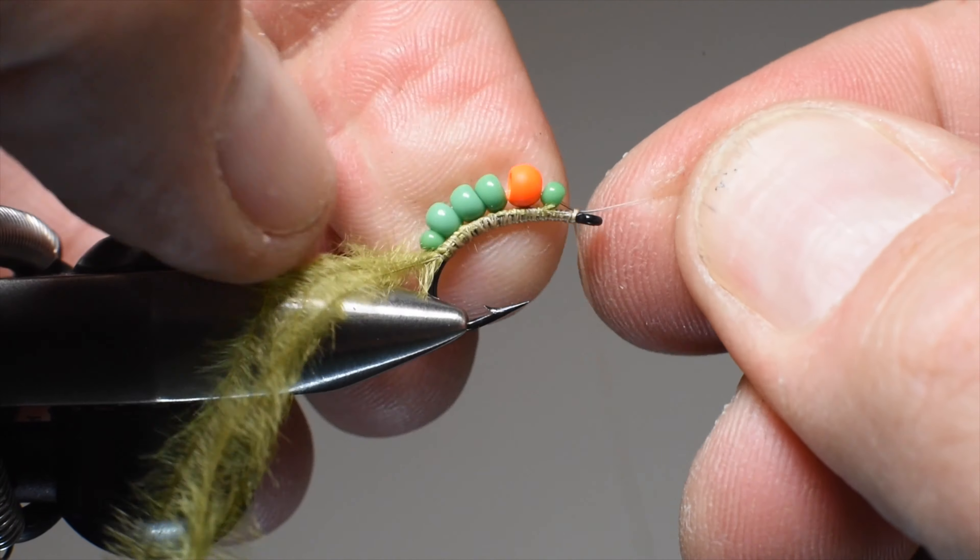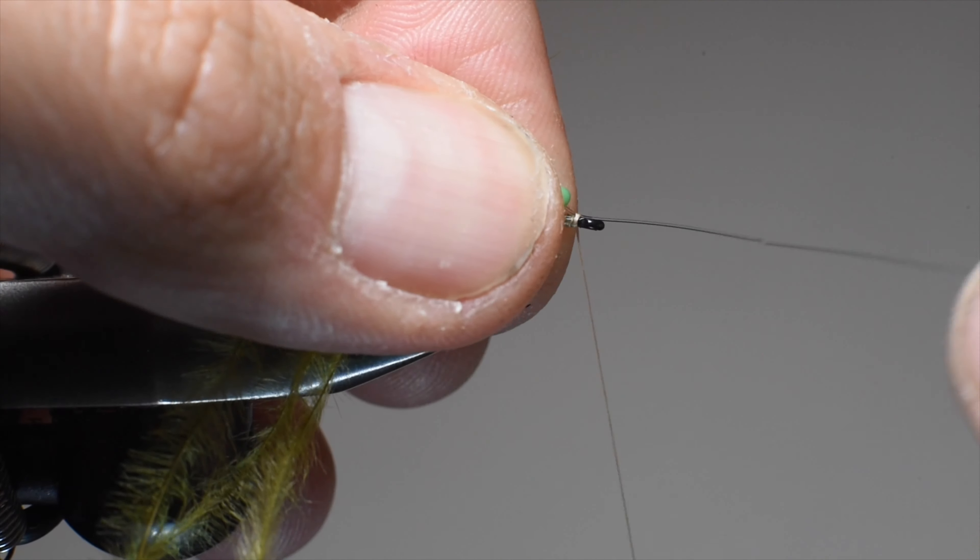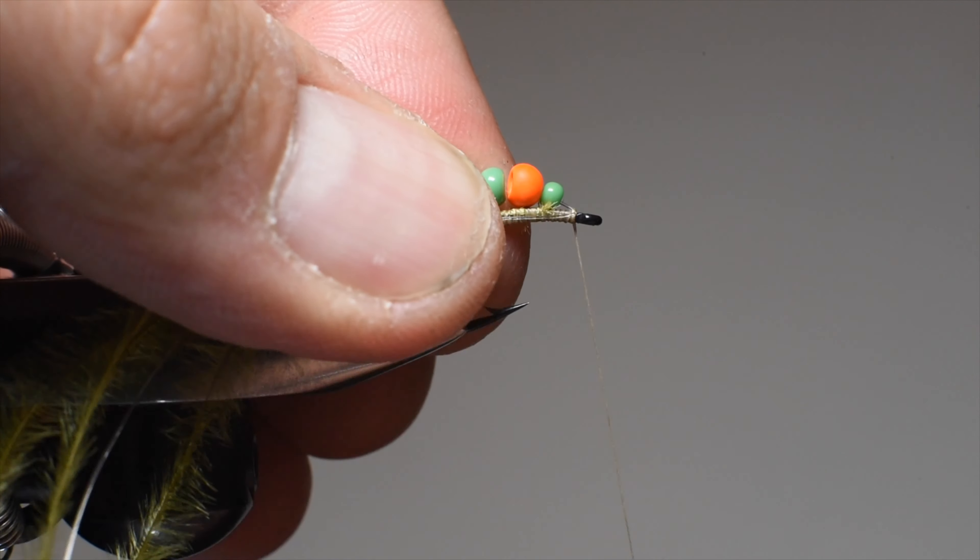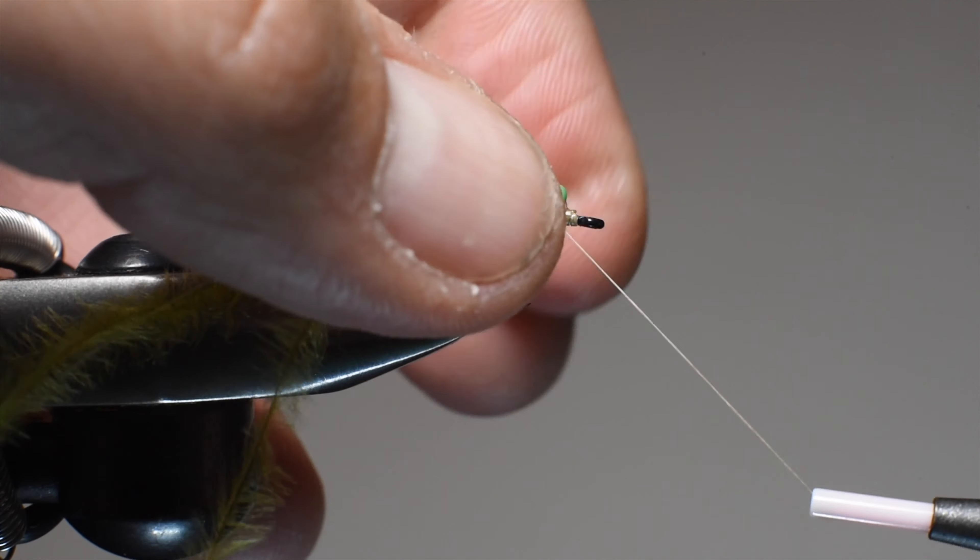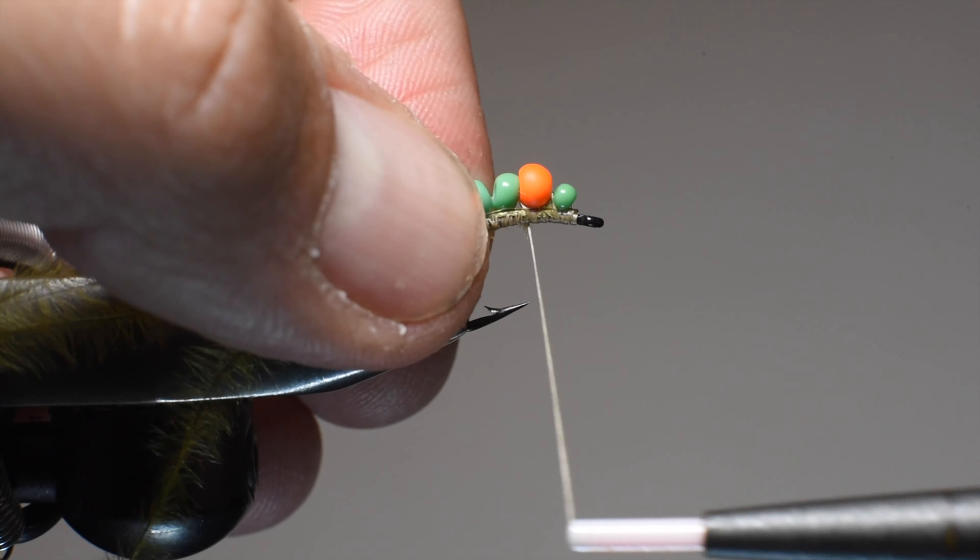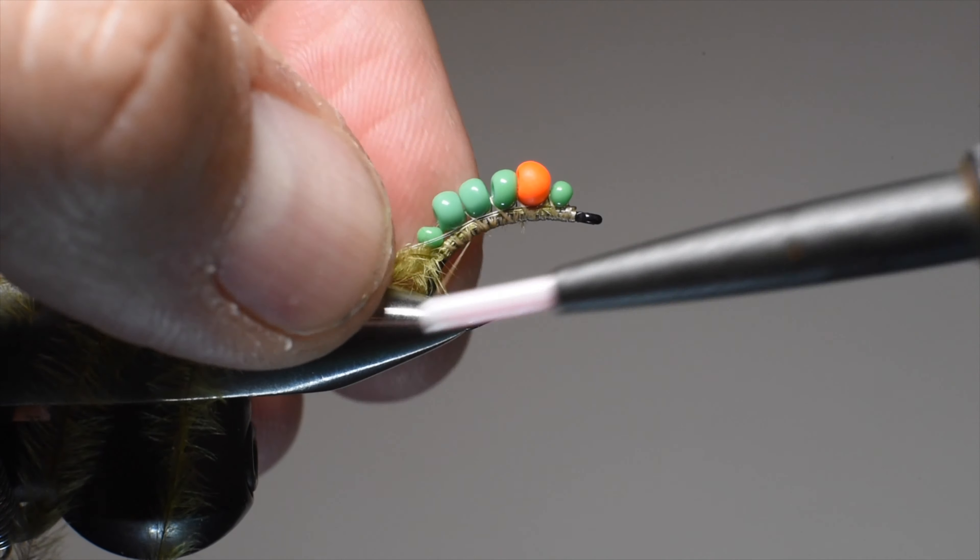I'll do a double wrap and make sure it looks good. Then we'll pull this tippet back over itself on the shank of the hook and tie that. As I secure that first bead, I kind of pull it forward and do the same with the second and third.